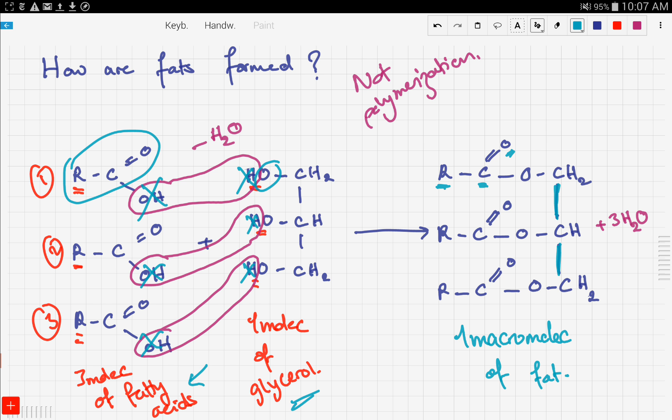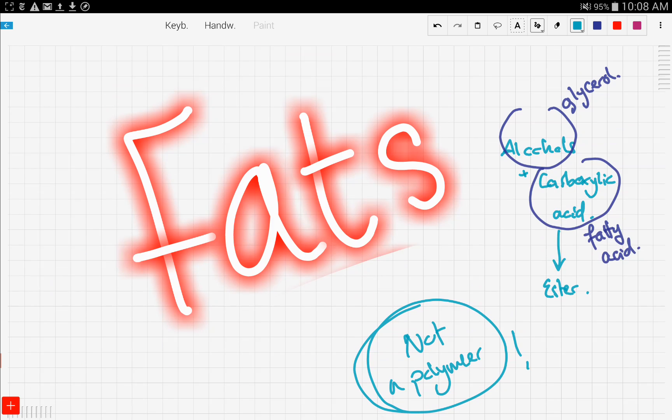You need to know that this is not a polymer that we're making, we're making an ester, because we have an alcohol which is glycerol and we have a carboxylic acid which is the fatty acid. So it's the reaction between an alcohol and an acid which yields an ester.